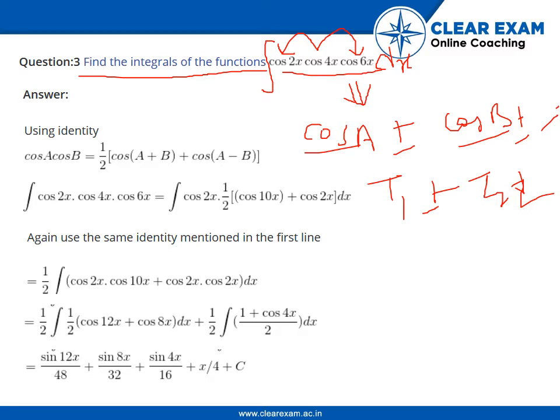We use the identity: cos A cos B is equal to half of cos(A + B) plus cos(A - B).